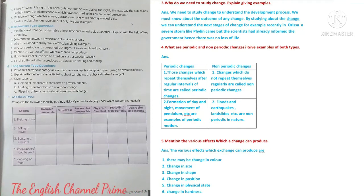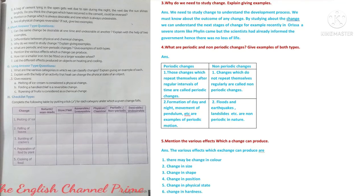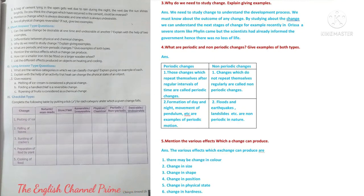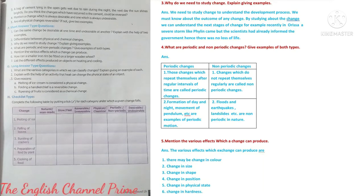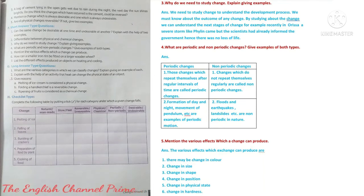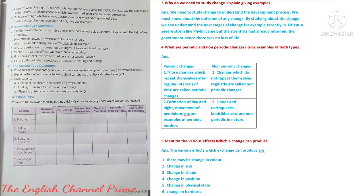Question four: What are periodic and non-periodic changes? Make two columns. Under periodic changes: those changes which repeat themselves after regular intervals of time are called periodic changes; for example, formation of day and night, movement of pendulum, etc. Under non-periodic changes: changes which do not repeat themselves regularly are called non-periodic changes; for example, floods and earthquakes are non-periodic in nature.